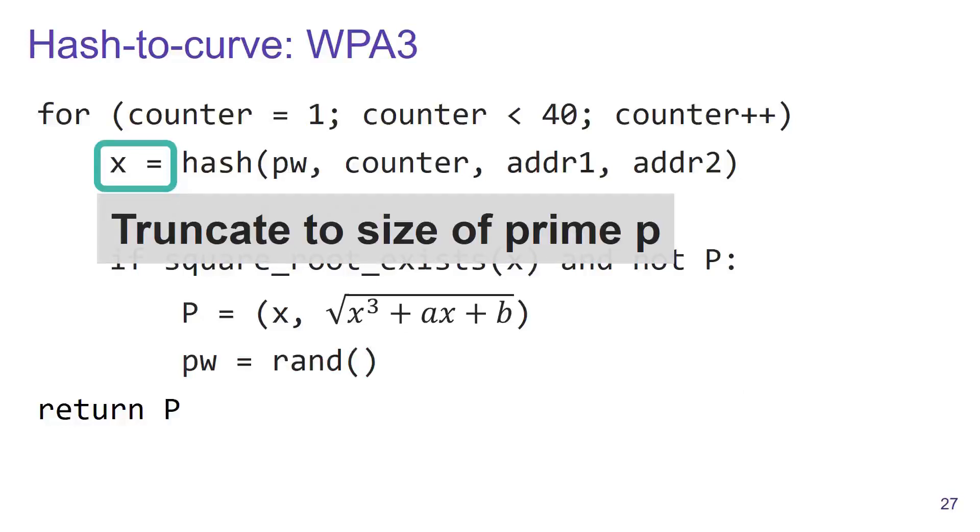Now there is still one remaining problem: the hash output has to be truncated to the size of the prime P. For example, if we are using a 256-bit elliptic curve, the output of the hash function is truncated to the first 256 bits. However, this truncation is not always sufficient.